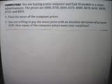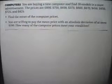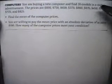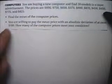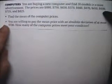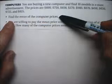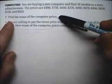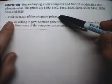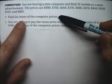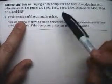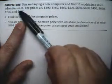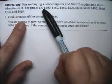In Example 4, we have a story problem. It talks about 10 models of computers, and it lists the 10 prices, and we have to find the mean. The mean is x-bar, and x-bar is the same as the average. To find x-bar, we have to add up the 10 numbers and then divide by 10.